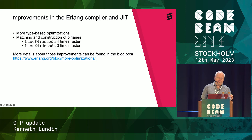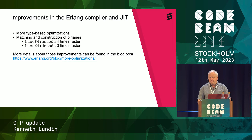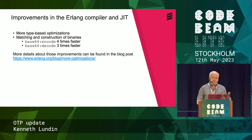There are a lot of improvements in the Erlang compiler and the JIT in OTP 26. Some of them are type-based optimizations, and others are improvements in matching and construction of binaries, which has made, for example, the base64 module's encode and decode significantly faster. There are more features you can read about in a blog post already published since April.